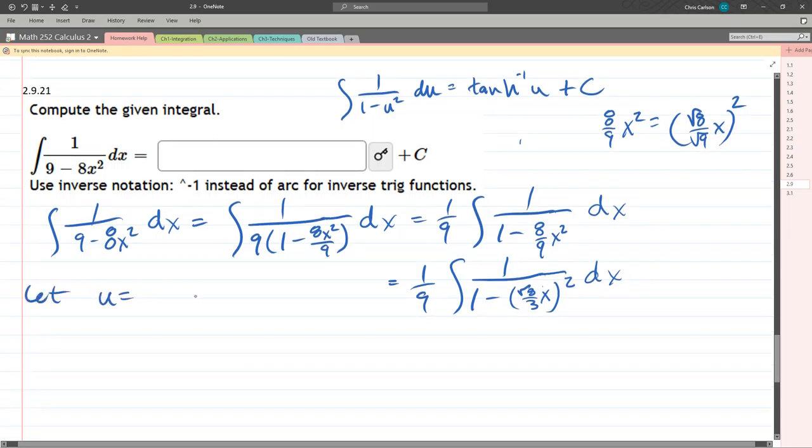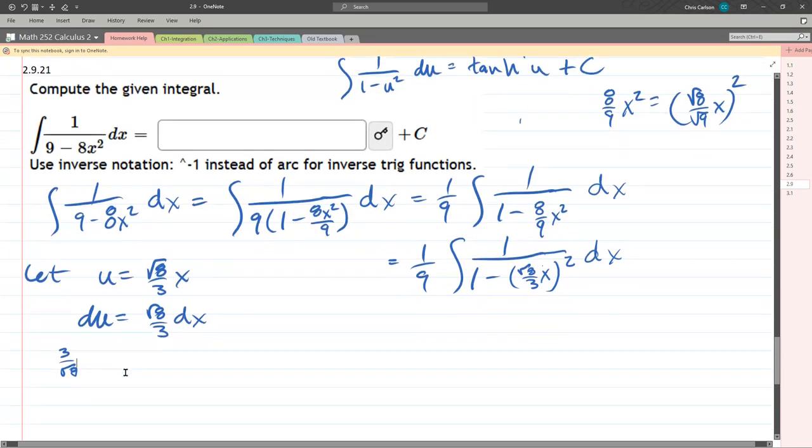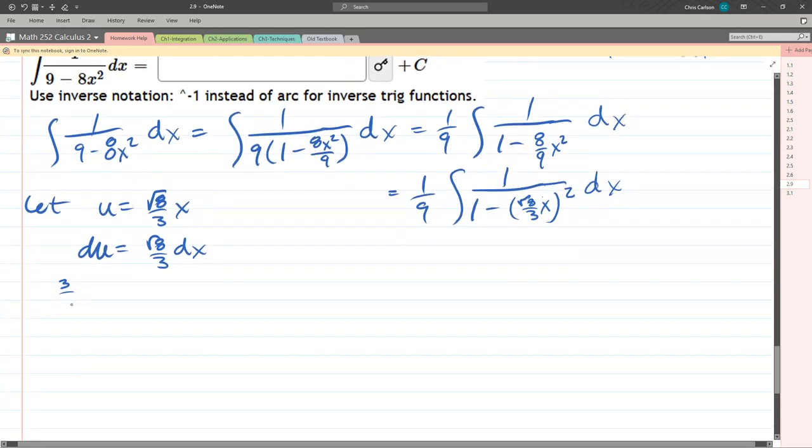All I'm going to do is a u substitution. Let u equal square root eight thirds x. So du is square root eight thirds dx. We don't have a square root eight thirds dx, so we'll multiply three over square root eight to the other side.